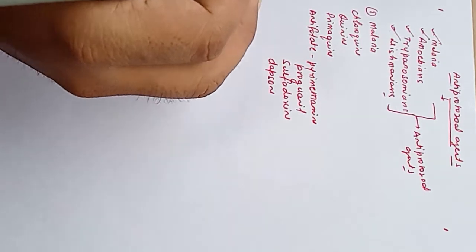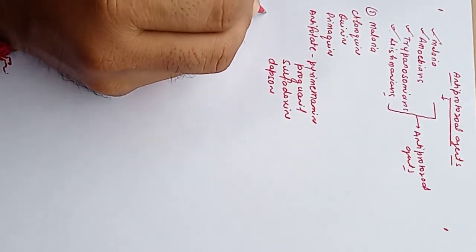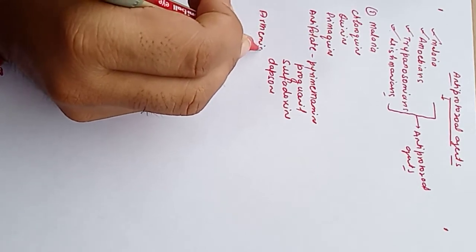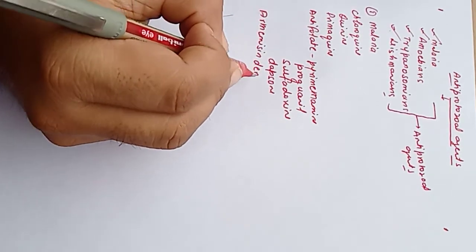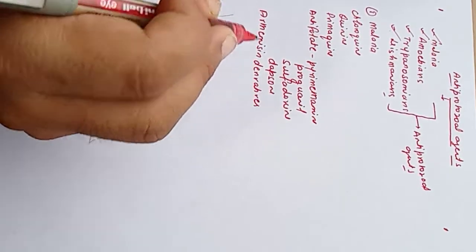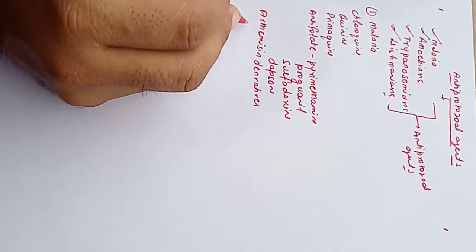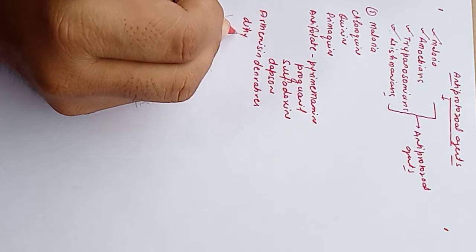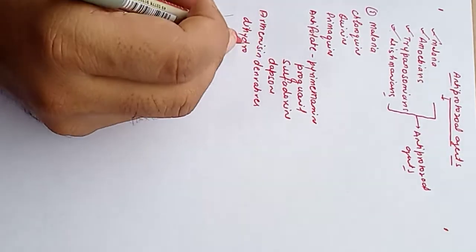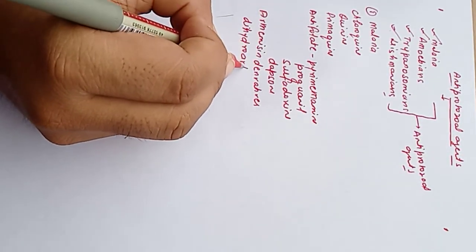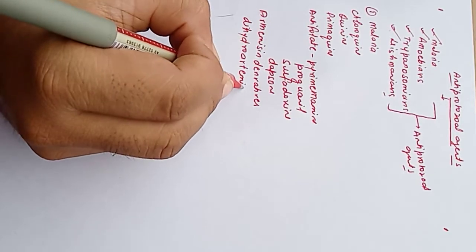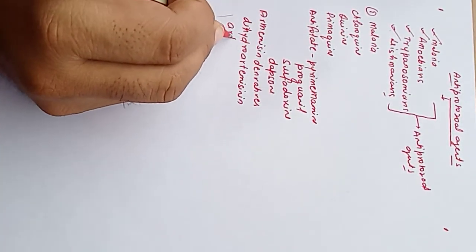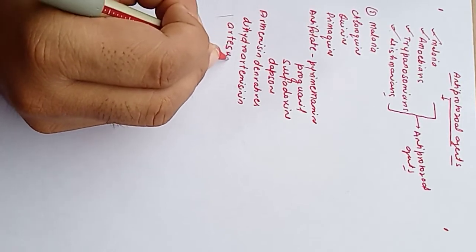Another well-known group of antimalarial agents are the artemisinin derivatives. In this group, the drugs are artemisinin, dihydroartemisinin (which is the active form of artemisinin), artesunate, and artemether.